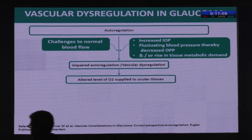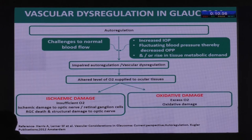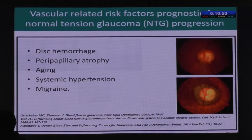This causes altered levels of oxygen supplied to the tissues, which can cause ischemic damage if there is insufficient oxygen — leading to damage to the optic nerve and retinal ganglion cells — or if there is excess oxygen, it leads to oxidative damage. Too much or too little oxygen are both bad for the eye.